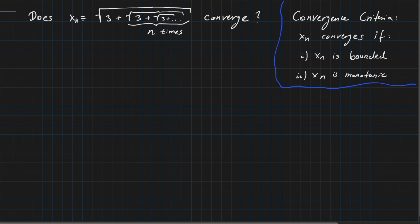We can rewrite this sequence with a recursive definition where x_{n+1} is defined as √(3 + x_n), and our anchor point x_0 is √3. You can check that this sequence exactly reflects the sequence from our task.